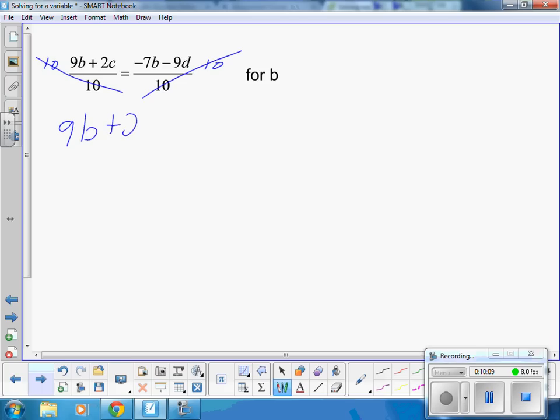So I'm left with 9B plus 2C equals a negative 7B minus 9D. We cross-multiplied because this, I believe, was a 10, but this number right over here was a 7. So yes, we took the 7 times the 9B plus 2C, we took the 10 times this, and then we went through what I'm going to do next.